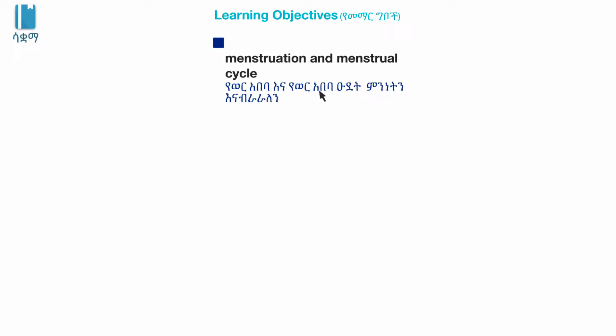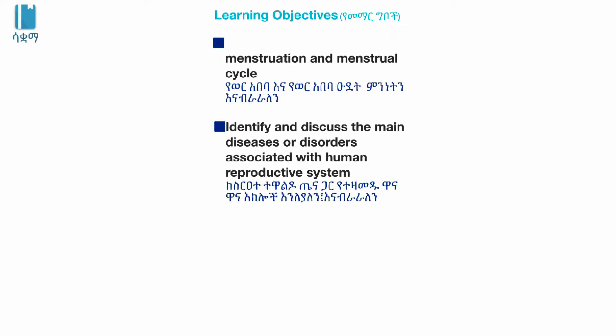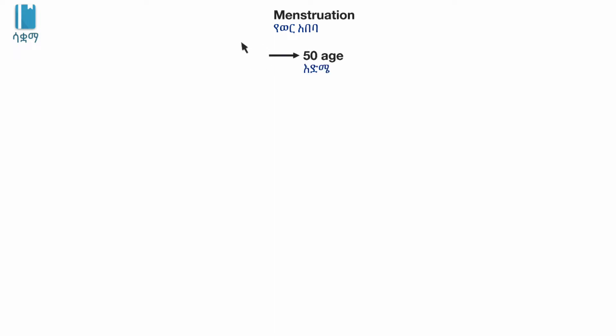We will identify and discuss the main diseases or disorders associated with the human reproductive system. If you have a menstrual cycle, you will be able to determine the same way you can develop. The menstruation is related to the menstrual cycle. There are a few reasons for the menstrual cycle.